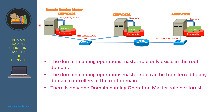Now let's take a look at this Active Directory forest. gpvdc01 is currently holding the Domain Naming Operations Master role, so it can read, create, or delete the objects in the partition container. In the root domain, active life skills.local, we have two domain controllers: gpvdc01 and gpvdc02. We can transfer the Domain Naming Master role from gpvdc01 to gpvdc02. After the role transfer is complete, gpvdc01 can only read the partition container, and gpvdc02 can read, create, or delete objects in the partition container.